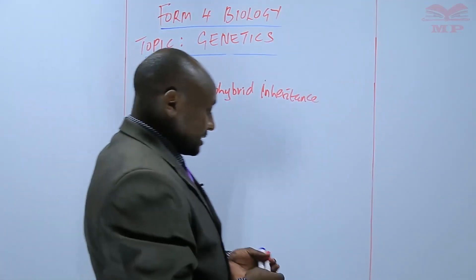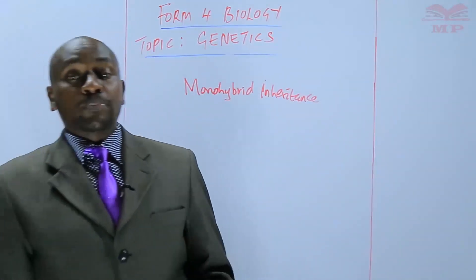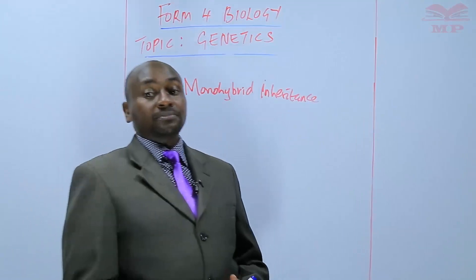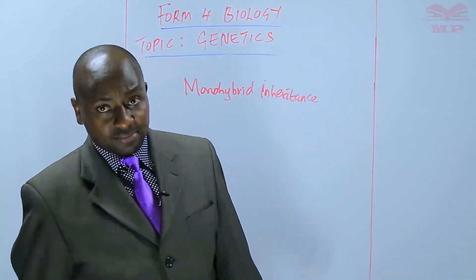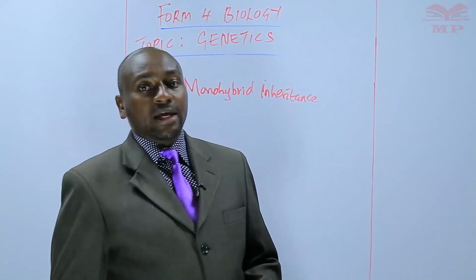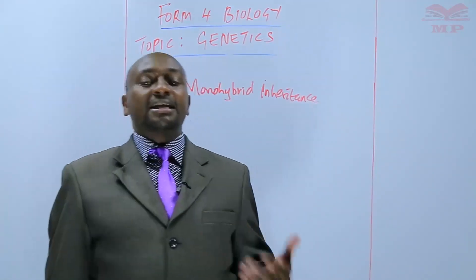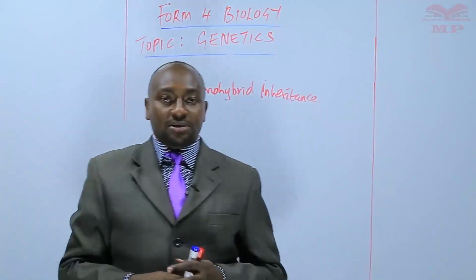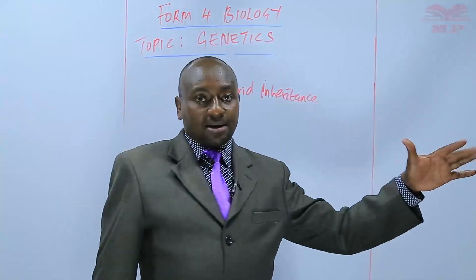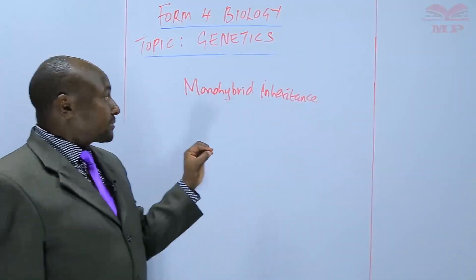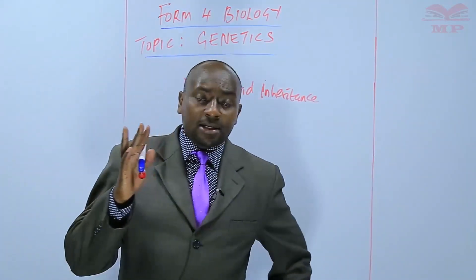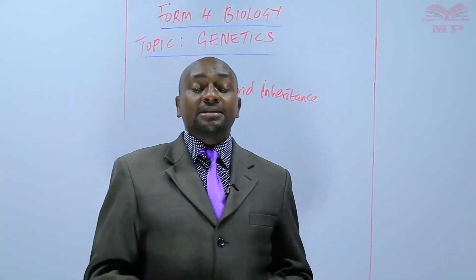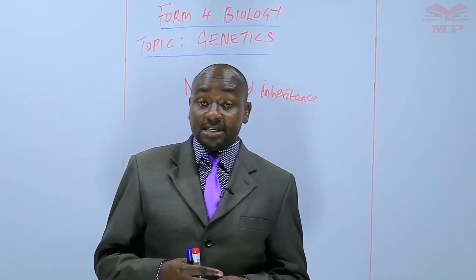Monohybrid inheritance is a terminology founded from the first law, which is the law of segregation. This concept says that each particular trait is inherited independently of other traits. For example, if you are looking at how tallness is inherited, you narrow down to tallness only. This is borrowed from the law of segregation, which states that each characteristic of an organism is determined by a pair of hereditary factors.